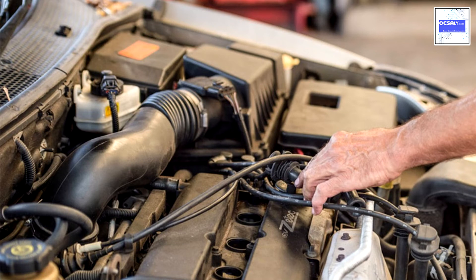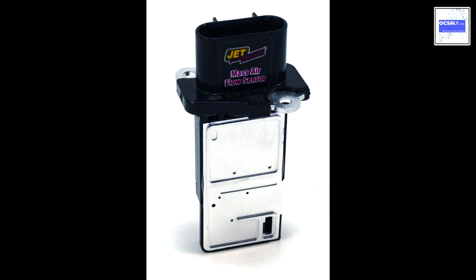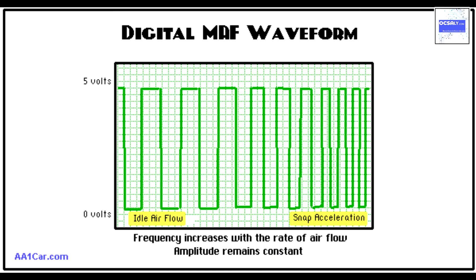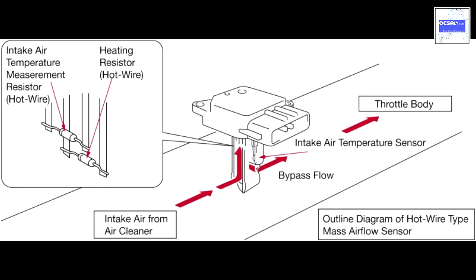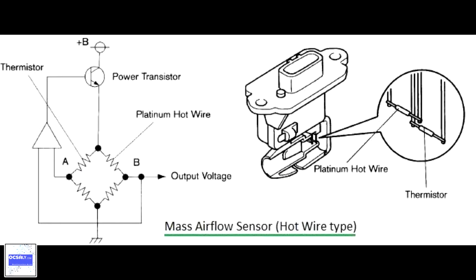The Mass Airflow Sensor, MAF, is one of the key components of an electronic fuel injection system in your car. It is installed between the air filter and the intake manifold of the engine. The Mass Airflow Sensor measures the amount of air entering the engine or the airflow. In modern cars, an intake air temperature or IAT sensor is built in the Mass Airflow Sensor.